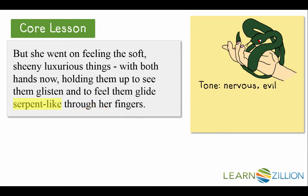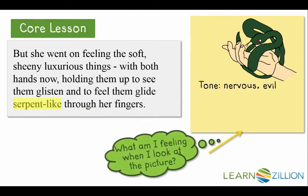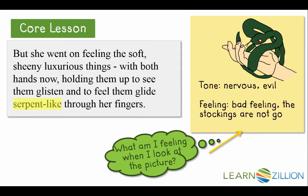Next, I'm going to ask, what am I feeling when I look at the picture? When I look at the picture and see that serpent gliding through Mrs. Sommers' delicate fingers, I get a bad feeling like the stockings are not good for Mrs. Sommers. I think this because serpents are not very cuddly and nice — they are slithery and, in my opinion, yucky. I definitely don't want one in my hand. I'll jot this down on my note.